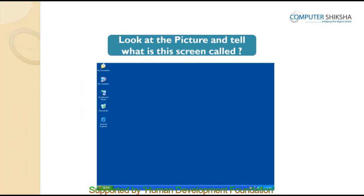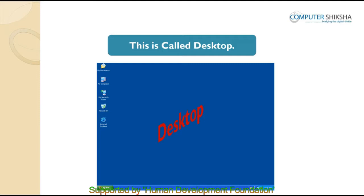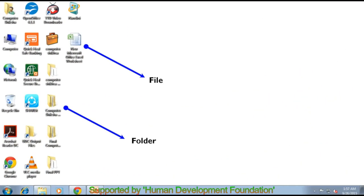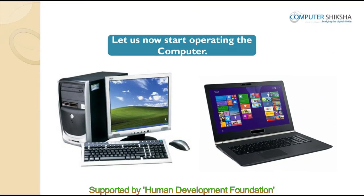Look at the next picture and tell what is this screen called. This screen is called a desktop. The desktop is the window on the computer which lets us look at the applications or the files and folders that we are working upon or have been saved on the computer. From this window, we can directly open the applications or files or folders that we want to work upon. We will learn more about files and folders in the next classes.